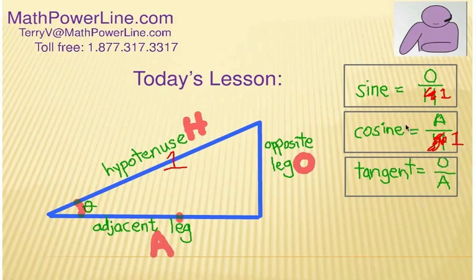And that gives us the sine is the opposite leg over one. In other words, it's the opposite leg. So, let's think of it. In the unit circle now, the opposite leg is the sine value.